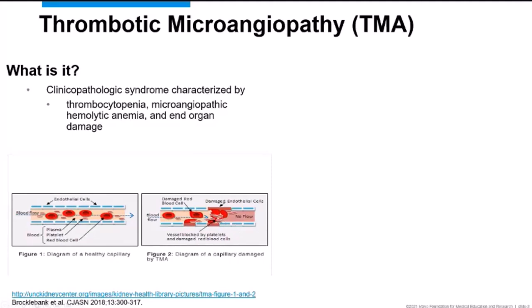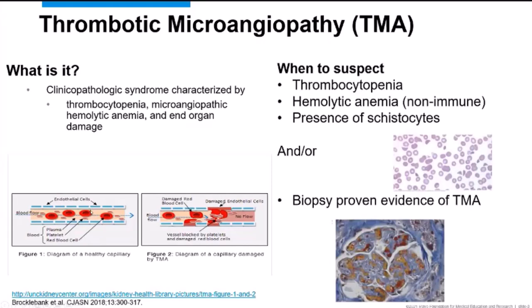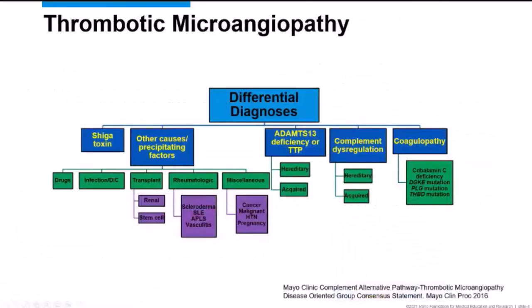Clinically, I suspect TMA when a patient has low platelets and hemolytic anemia that is non-immune — Coombs testing is negative. On peripheral smear I see schistocytes, resulting from red cells breaking at areas of microthrombi formation. I also suspect TMA when a kidney biopsy shows pathologic findings consistent with thrombotic microangiopathy.